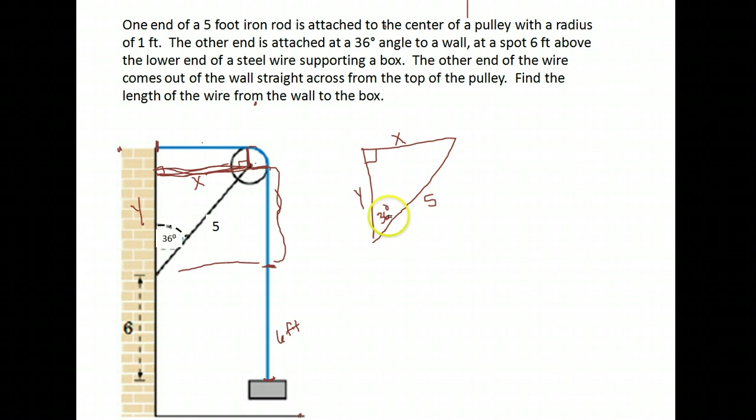We have a 36-degree angle. Notice if I want to find my x, x is the opposite leg and here's my hypotenuse. What uses opposite and hypotenuse? That's sine. Sine of 36 degrees is the opposite side x over the hypotenuse of 5. If I want to solve for x, I multiply both sides by 5.